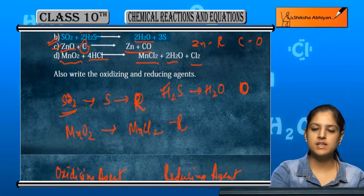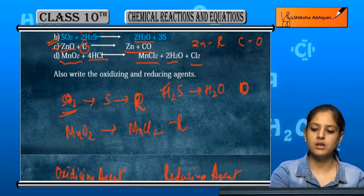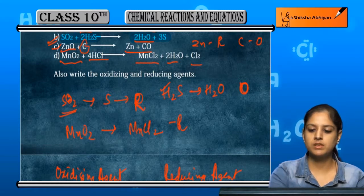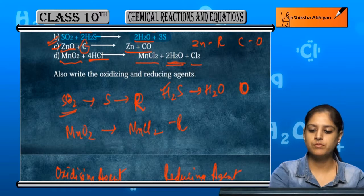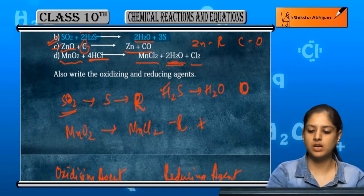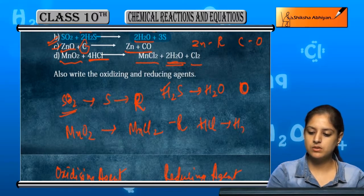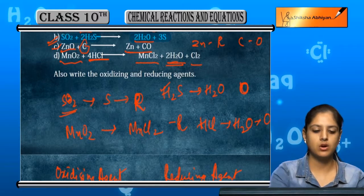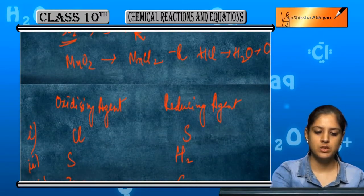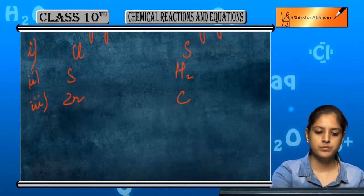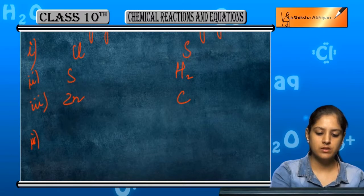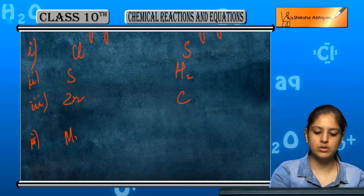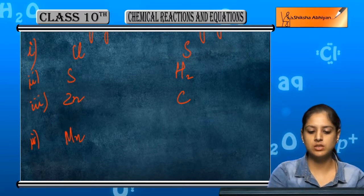HCl first had hydrogen, then chlorine combined with oxygen from HCl, so HCl has been oxidized. Manganese was reduced, so MnO₂ is the oxidizing agent, and HCl is the reducing agent.